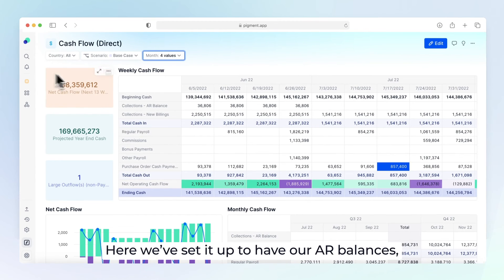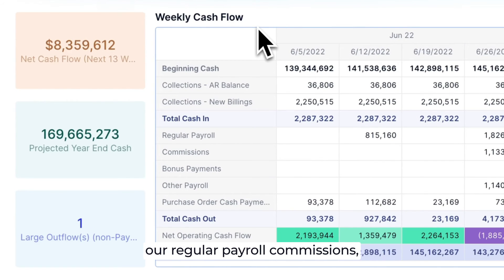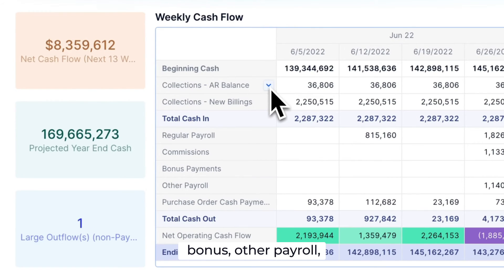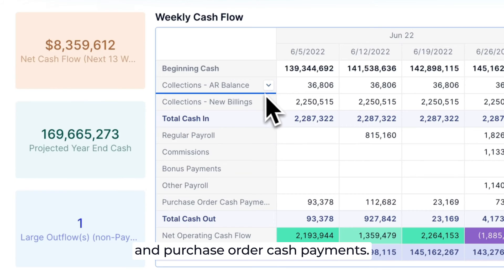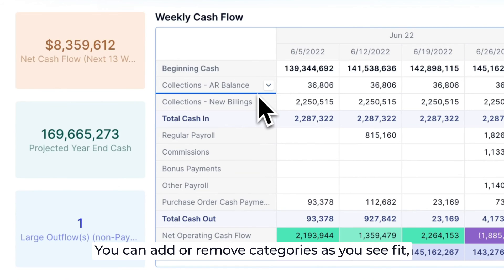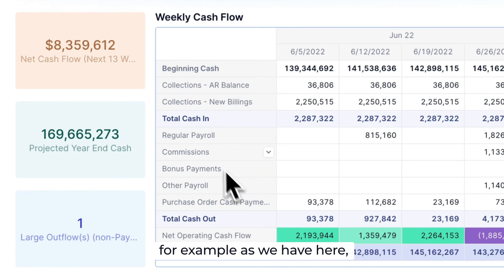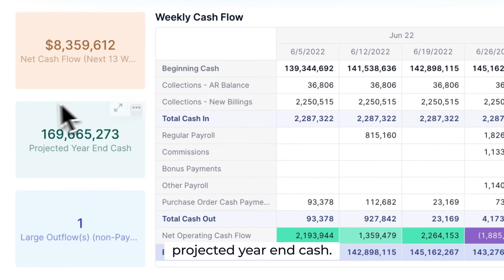Here, we set it up to have our AR balances, our new billings as total cash, our regular payroll commissions, bonus, other payroll, and purchase order cash payments. You can add or remove categories as you see fit, and you can also set up KPIs — for example, as we have here, projected year-end cash.